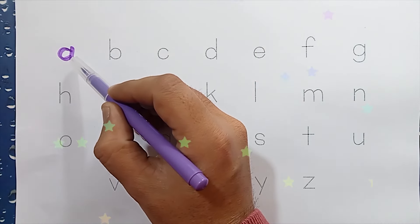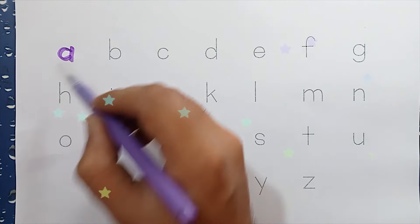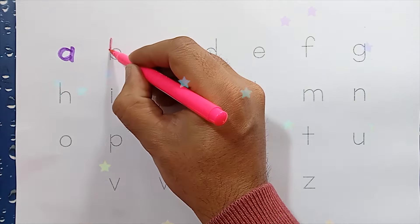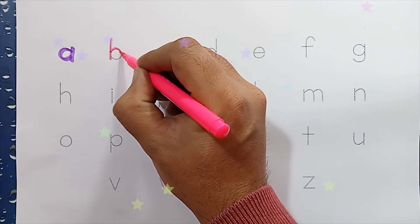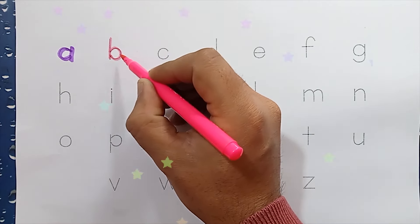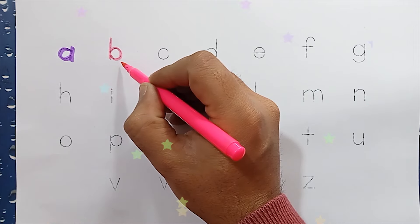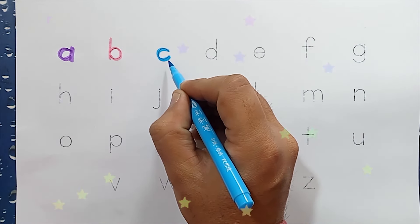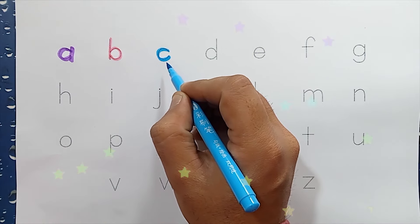A. A is for aeroplane. B. B is for balloon. C. C is for cat.